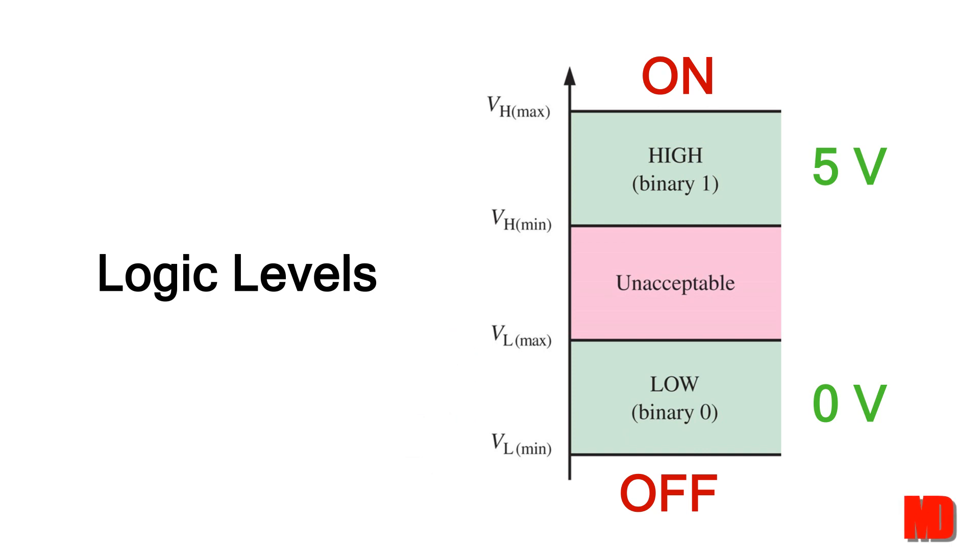Between V H min and V L max is the buffer zone where the logic level will not change from high to low, or from low to high.